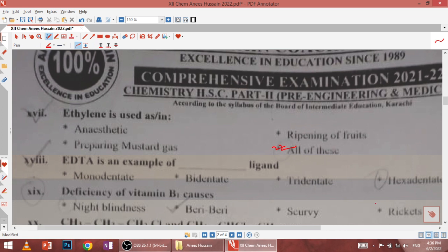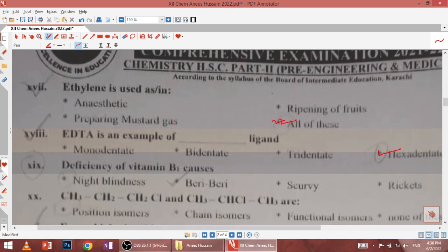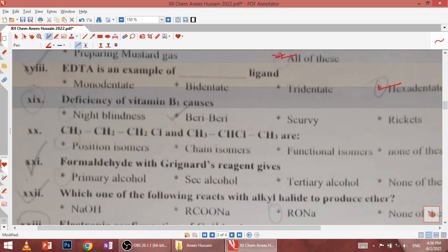Next, EDTA is an example of hexadentate ligand which has denticity six. Nineteenth, deficiency of vitamin B1 causes what? Night blindness is due to vitamin A deficiency, so beriberi is the correct answer. Twentieth, these are position isomers where first is attached at position 1 and second at position 2.